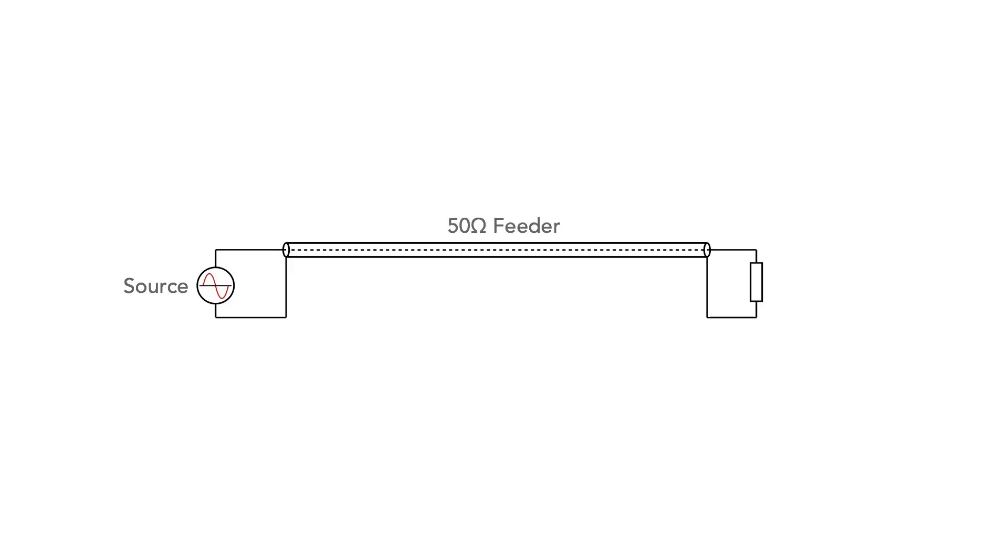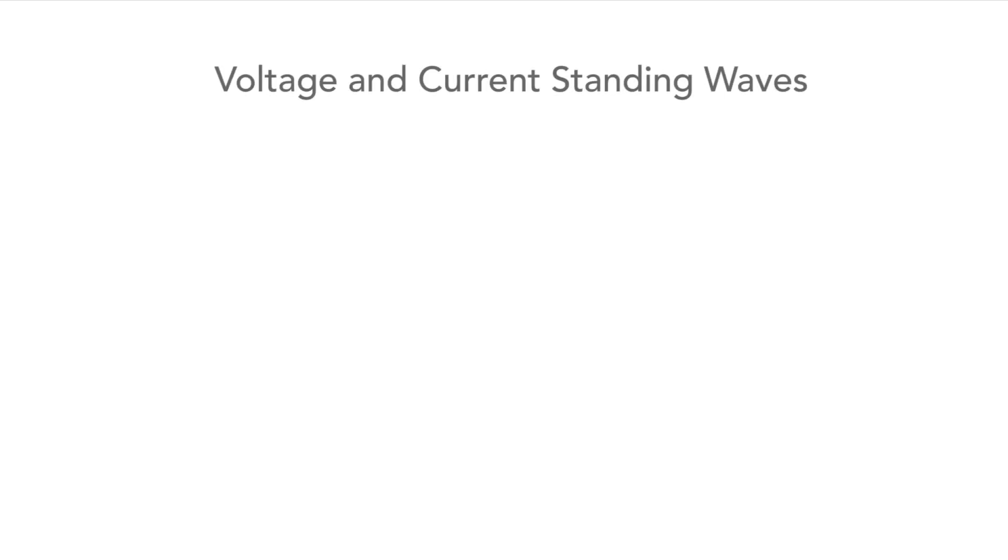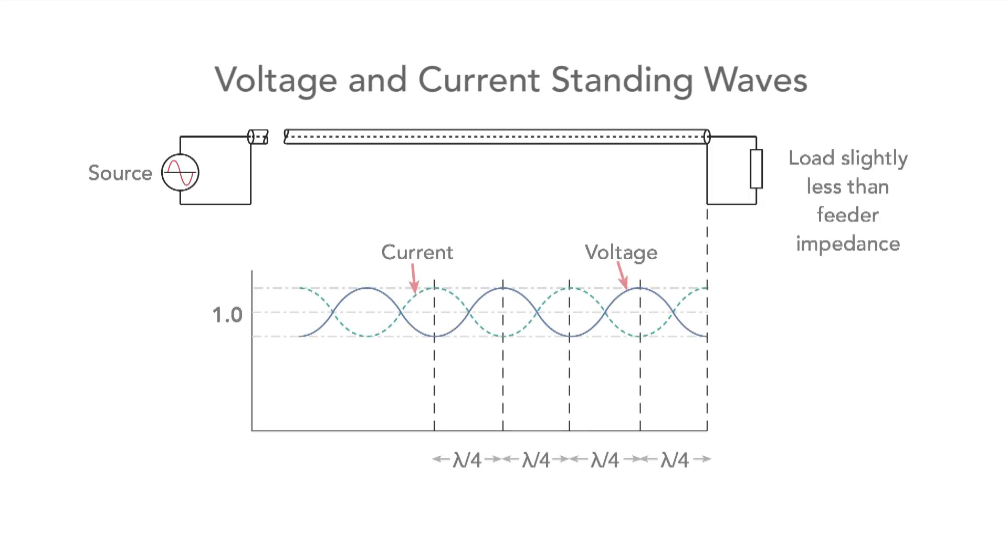If we have a 50 ohm feeder and a 50 ohm load then all the power is transferred from the feeder into the load and everything's fine. If there's a mismatch where the feeder impedance and the load impedance are not the same then it's not possible for all the power to be transferred and the remaining power does the only thing it can and travels back along the feeder as a reflected signal. And where the feeder is a reasonable proportion of a wavelength voltage and current standing waves become apparent as we shall see later.